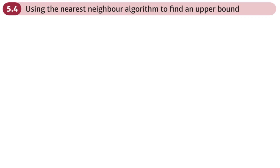This is the fourth and final section of the Travelling Salesman Problem chapter, chapter five. This is using the nearest neighbor algorithm to find an upper bound. This is just a different way of finding an upper bound for the Travelling Salesman Problem. Previously we've used minimum spanning trees to find an upper bound by just doubling the weight of a minimum spanning tree. That's fine if the network is small, but if the network is large, that can take a very long time to do.